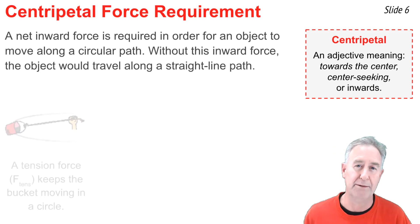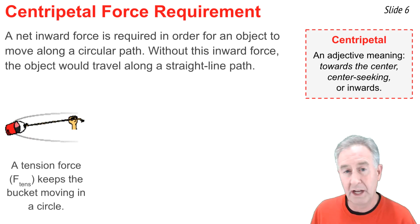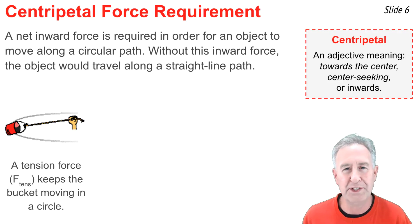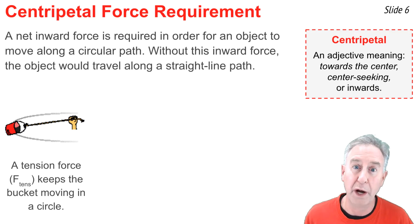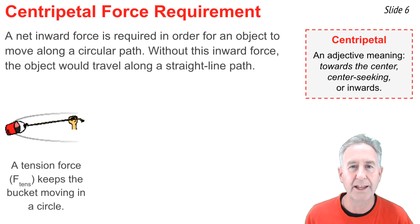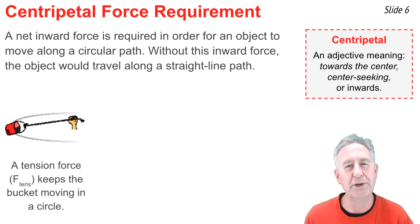Let me give three examples. In the first example, a rope is tied to a bucket of water and whirled in a circle in a horizontal plane. What force meets the centripetal force requirement? The answer is the force of the rope pulling on the bucket — an inward tension force that meets the centripetal force requirement.